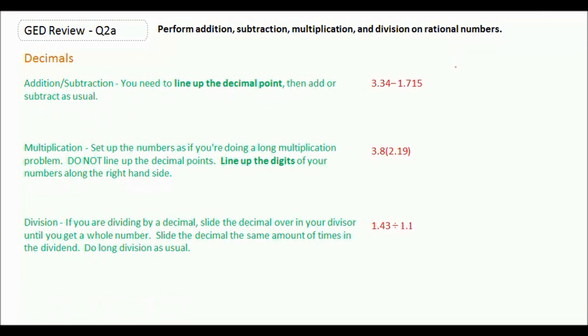So here we would say 3.34 minus 1.715. Notice the decimal points are lined up. But there's a missing space here. If we have a terminating decimal, which is the case, we can always add a zero to the end because that doesn't change the decimal.